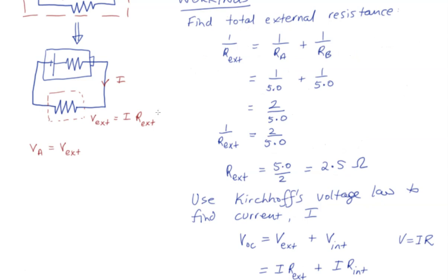So now that we know the external resistance, we know the current, we can work out what the voltage across the external resistance is. And then we can just refer to this relationship to determine the voltage across resistor A.